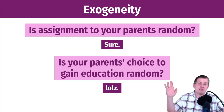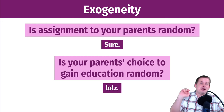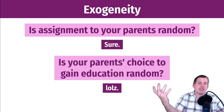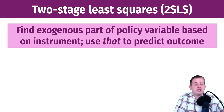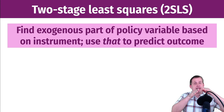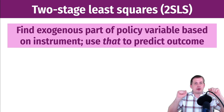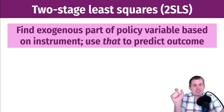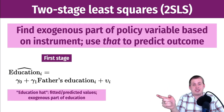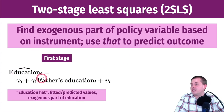So we've checked relevancy, excludability, and exogeneity. With those three things satisfied, we can do the magical splitting into exogeneity and endogeneity through something called two-stage least squares regression, or 2SLS. The idea: in the first stage, you find the exogenous part of the policy variable based on the instrument; then in the second stage, you use that to predict the outcome.